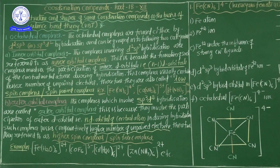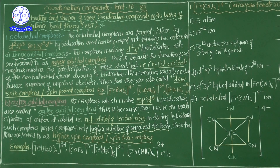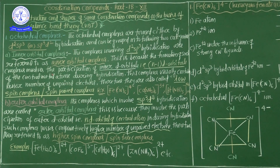If inner orbitals of the central metal atom are involved in hybridization, that is called d²sp³ hybridization. If outer orbitals are involved in hybridization, that is called sp³d² hybridization. Both types result in octahedral complexes. The central metal atom has two types of orbitals: inner and outer.